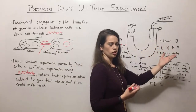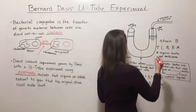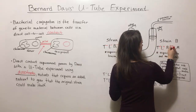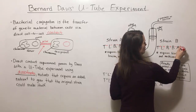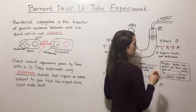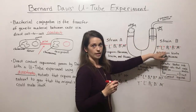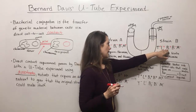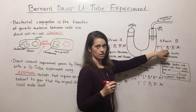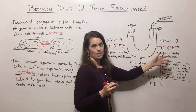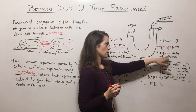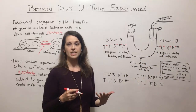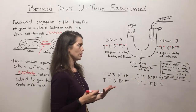Strain B was just the opposite. It was T plus L plus B1 plus B minus M minus. So it was perfectly capable of making its own threonine, leucine, and thiamine, but it could not make its own biotin and methionine. Those things had to be added to its media in order for it to be able to grow.